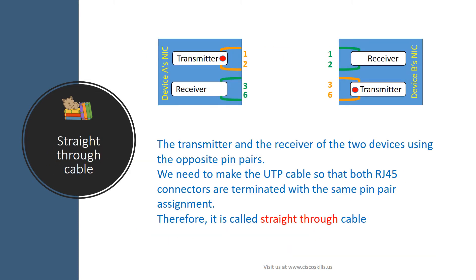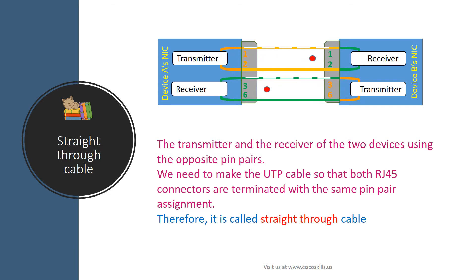Let's look into this example. It shows two NICs with only four pins each. The transmitter and receiver of the two devices are using opposite pin pairs. In order to connect the transmitter of one device to the receiver of the other, we need to make the UTP cable so that both RJ45 connectors are terminated with the same pin pair assignment. Inside the RJ45 connectors, the cable connects pin 1 to 1, 2 to 2, 3 to 3, and 6 to 6. That's why it is called straight-through cable.